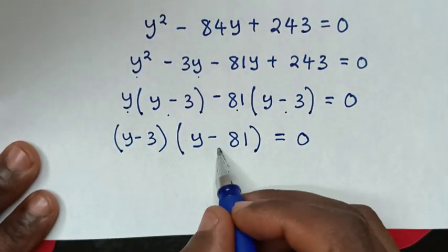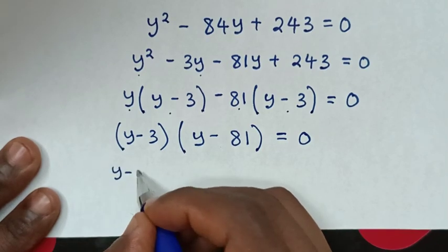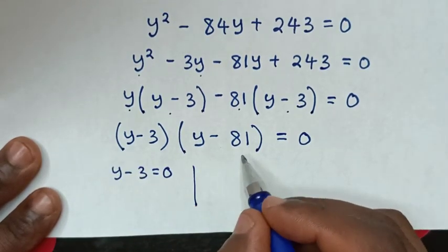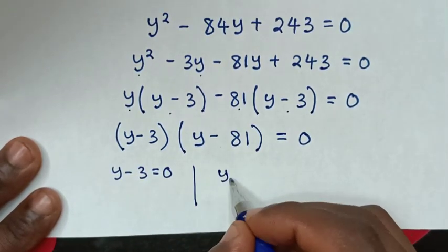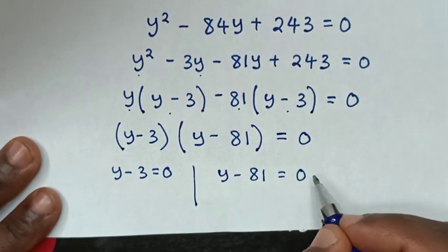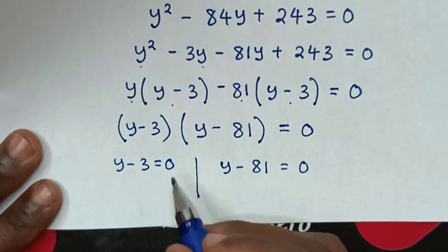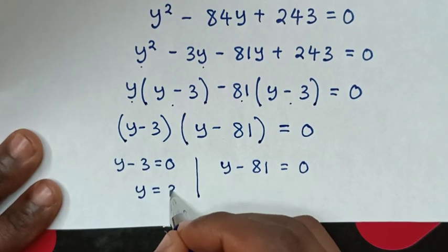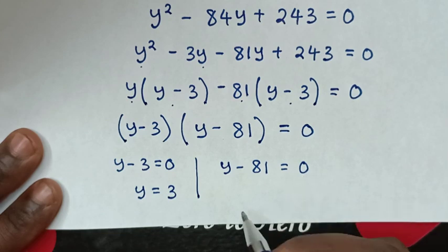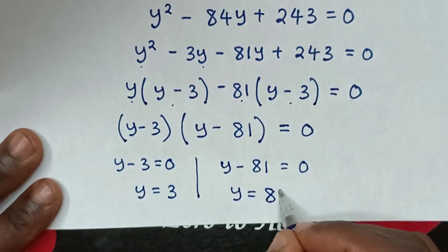From here we have two solutions. The first solution: y minus 3 equals 0, giving y equals 3. The second solution: y minus 81 equals 0, giving y equals 81.